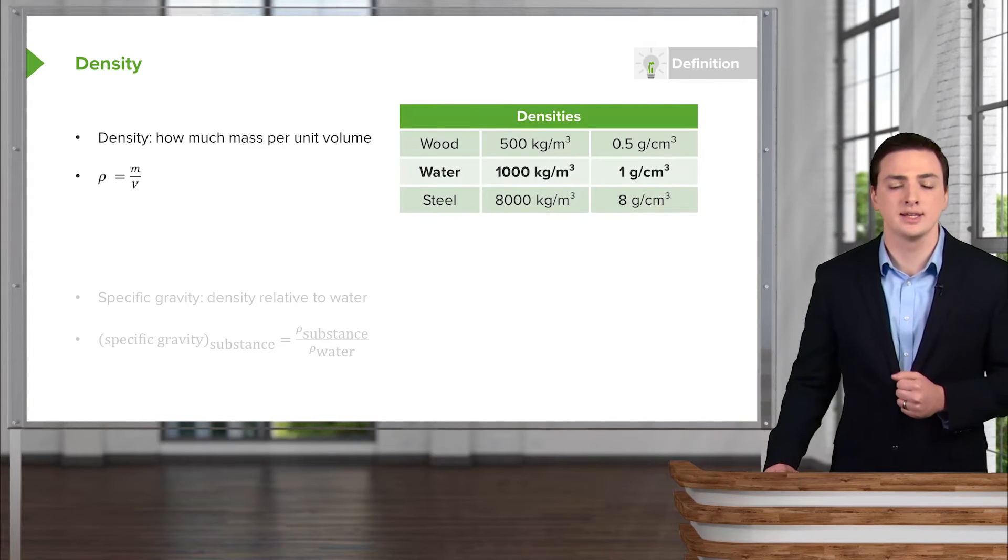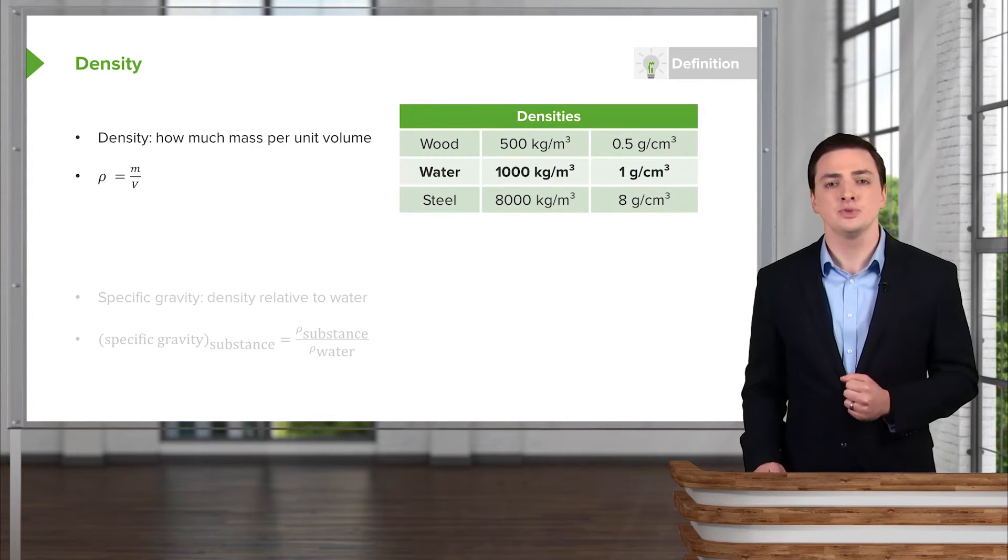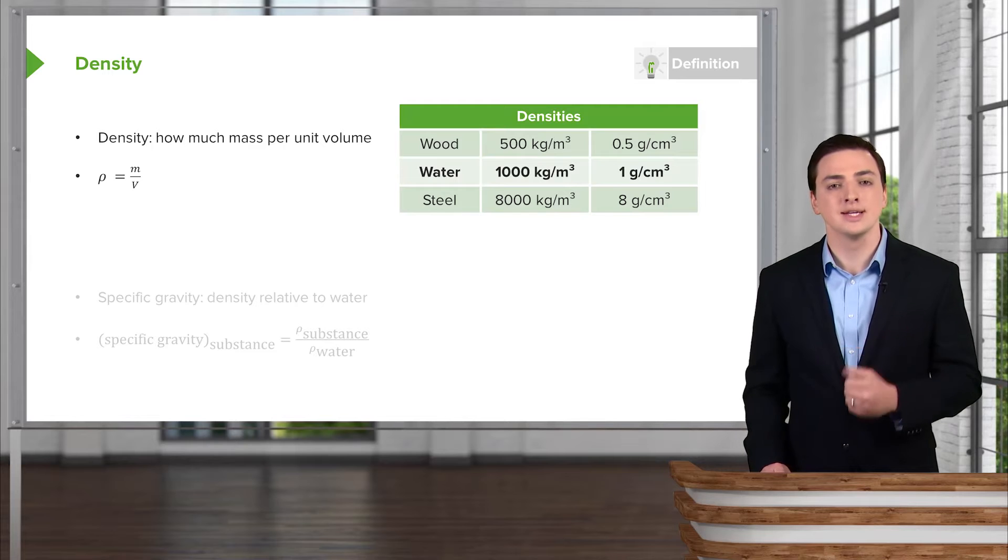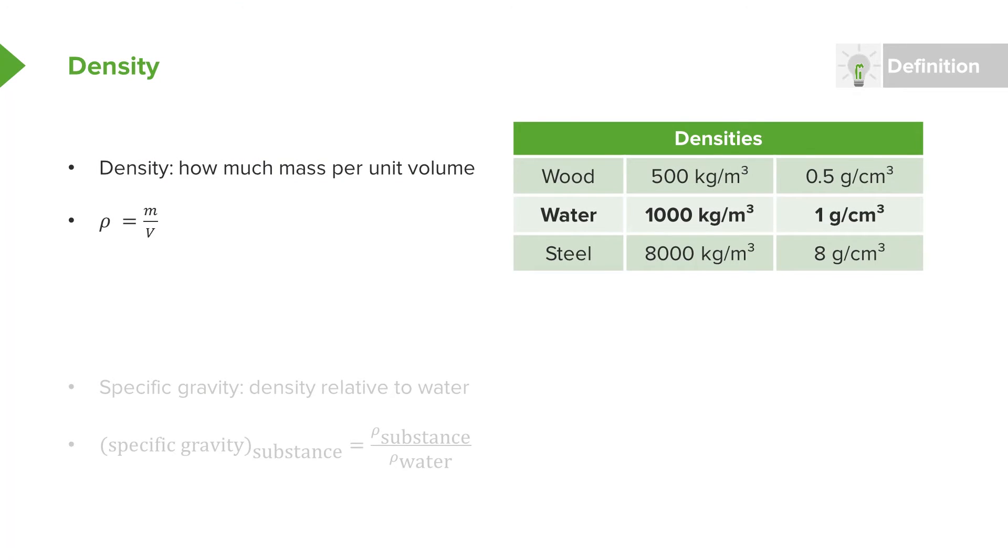Here are some example densities that you can look at just for reference. We have wood and water and steel. You can see that wood is less dense than water. You can see that steel is far more dense than water, which is, of course, why wood would float where steel would sink.